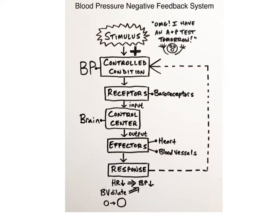A stimulus, like the stress one feels before an important test, causes the heart to beat faster, which increases blood pressure — our controlled condition. There are specialized nerve receptors in the walls of blood vessels, called baroreceptors, that are sensitive to changes in blood pressure and detect the increase. The baroreceptors generate input in the form of nerve impulses to the control center, which is the brain.